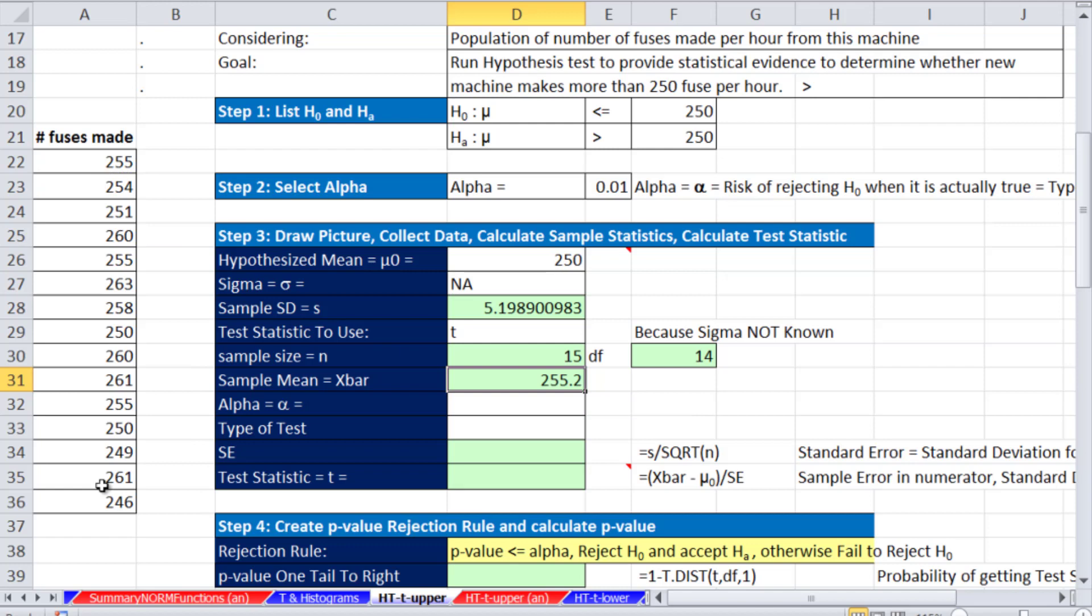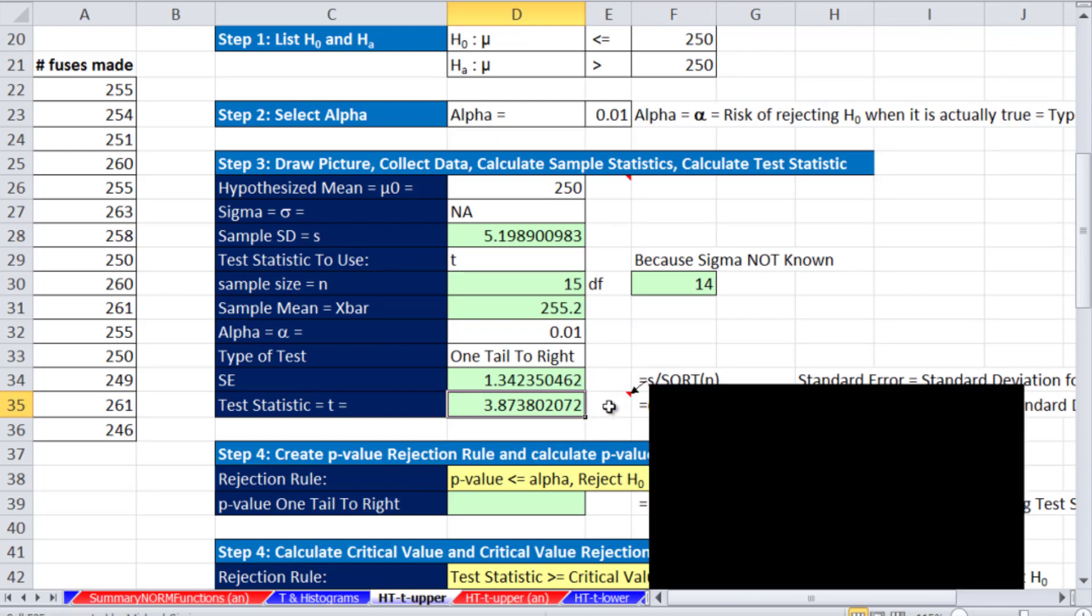So, we get 255.2 for alpha. Our type of test, this is a one tail on the upper end. So, that's on the right. Standard error. Now, we are going to use s instead of sigma. So, we say our s divided by square root of our n. Our test statistic, same as we've been doing for the z distribution. We're going to take our sample mean minus our hypothesized mean and divide it by the standard error. So, now we have our test statistic.